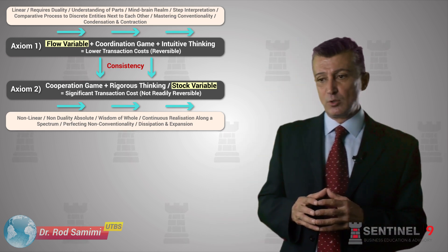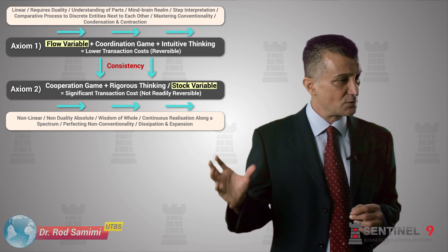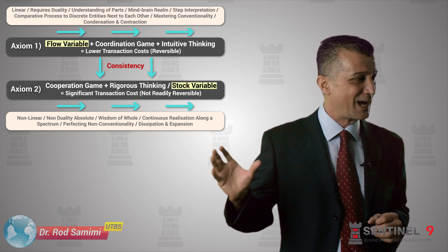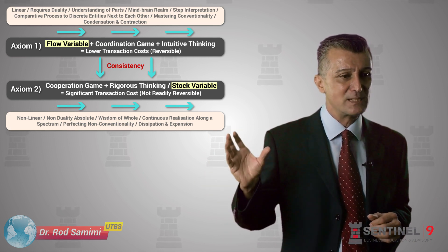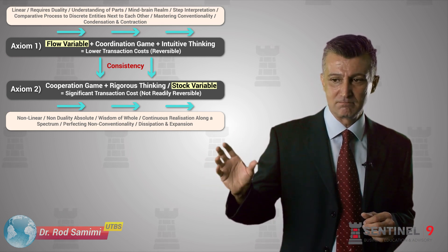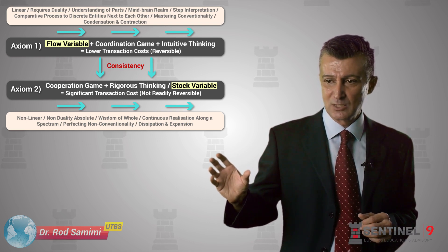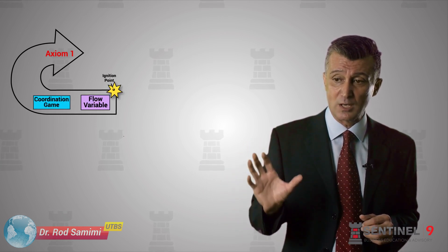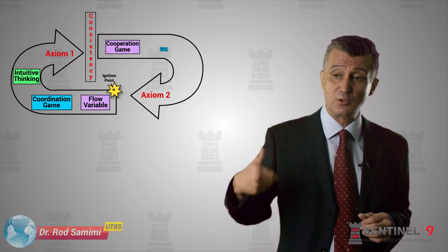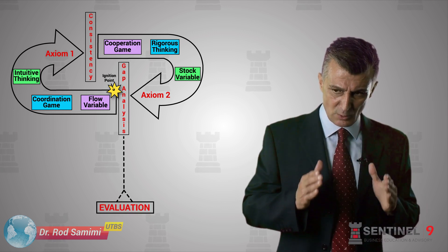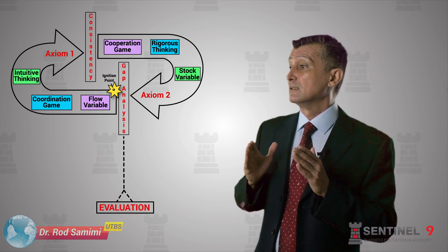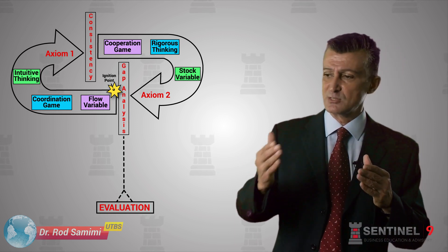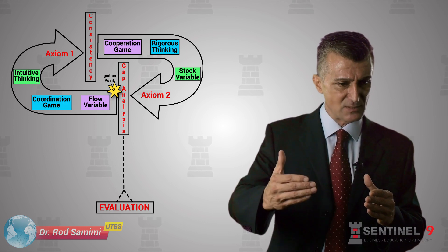A stock variable is something that is very difficult to attain unless a certain period of time has passed — it cannot be attained quickly. Brand name, trust, and competitive advantage of that source all take time and repetition. This requires resolution of a cooperative game, which requires iteration, slow thinking, and analytical application — and it comes from the application of flow variables and intuitive fast thinking.